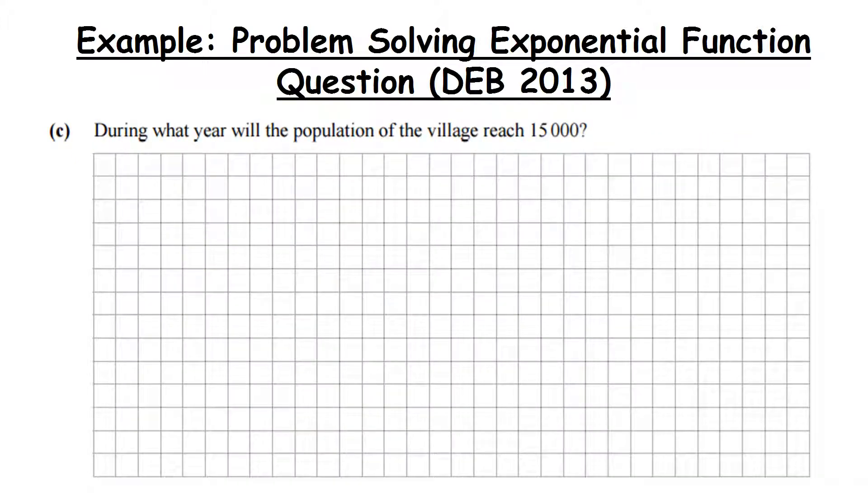Let's take a look at Part C of this question. During which year will the population of the village reach 15,000? So just be careful with this - during which year. So when we find a year, we need to figure out during which year is it going to happen. I'll come back to this as we get an answer, but just bear in mind what the question is.